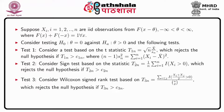The third test is Wilcoxon's signed rank test based on the statistic T3_n equal to the summation over i less than j of the indicator that (X_i plus X_j)/2 is greater than 0, divided by n choose 2, which rejects the null hypothesis if T3_n is greater than C3_n.